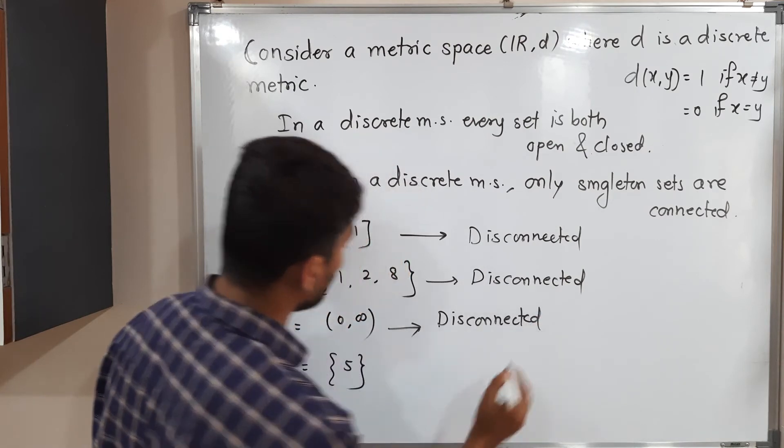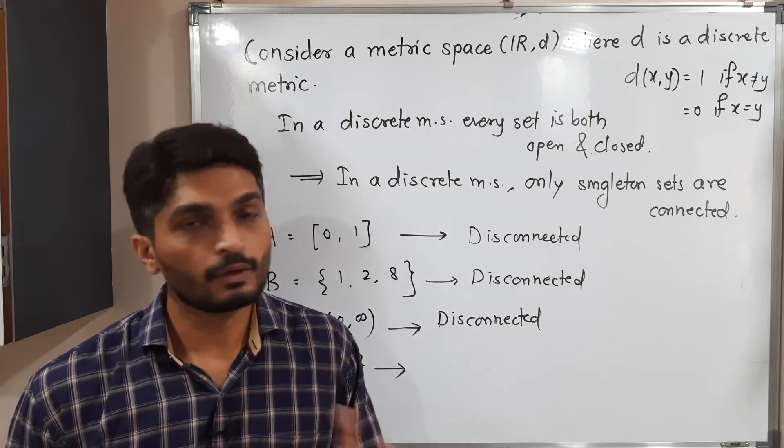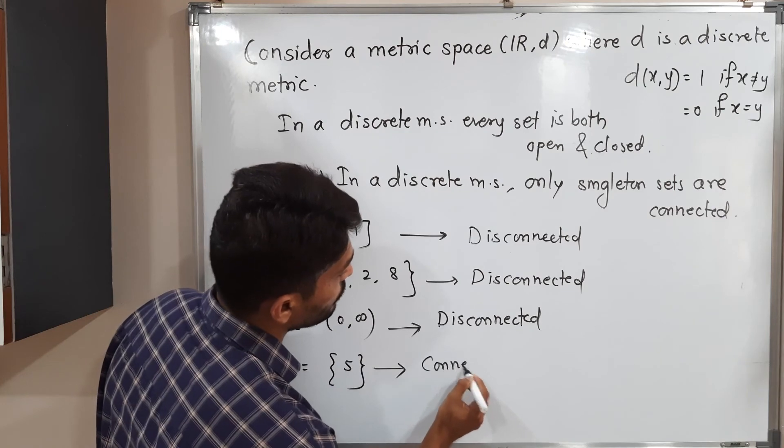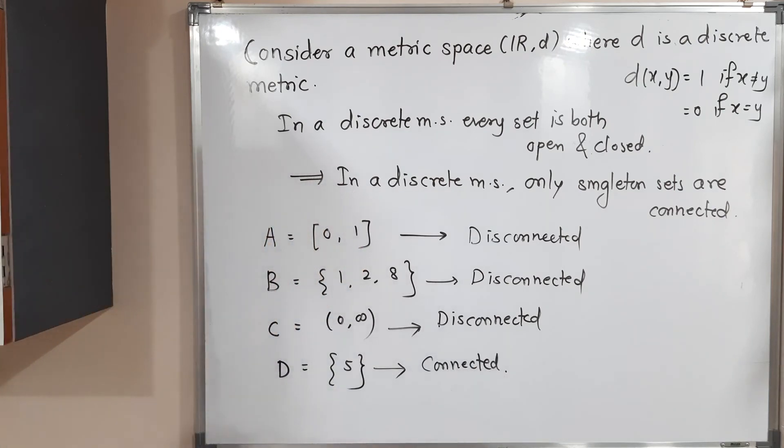When you talk about the last one, it is a singleton set, and in a discrete metric space every singleton set is connected. Therefore, D is connected. So out of these four, only one set is connected, which is the last one.